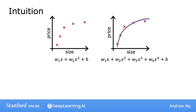Recall this example from the previous video, in which we saw that if you fit a quadratic function to this data, it gives a pretty good fit. But if you fit a very high order polynomial, you end up with a curve that overfits the data.